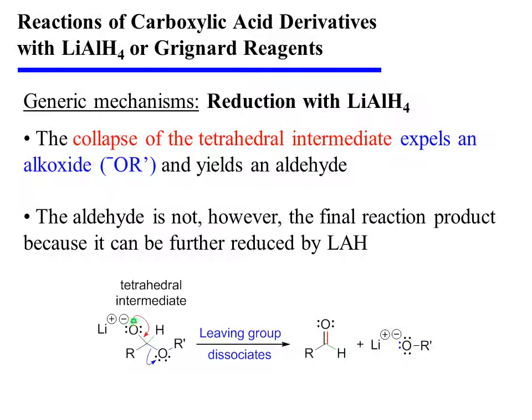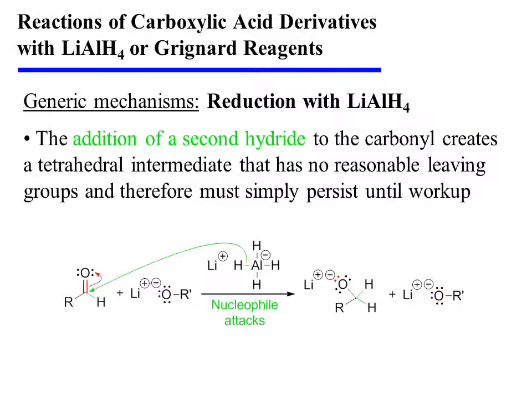The subsequent collapse of the tetrahedral intermediate expels an alkoxide as a leaving group and yields an aldehyde. The aldehyde is not, however, the final reaction product because it can be further reduced by lithium aluminum hydride. The addition of a second equivalent of hydride to the carbonyl creates a tetrahedral intermediate that has no reasonable leaving group and, therefore, must simply persist until workup.